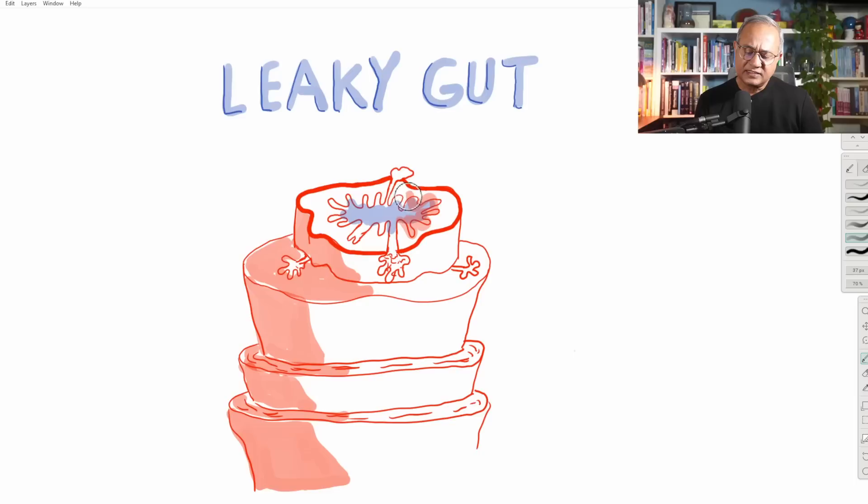Here in the GIT, these cells that are making this lining are said to form an epithelial barrier, intestinal epithelial barrier. The job of this barrier is to prevent various molecules and toxins and pathogens to enter deeper into the wall of the intestine. Whatever is received inside the wall can then get into the circulation through the blood supply of the GIT.